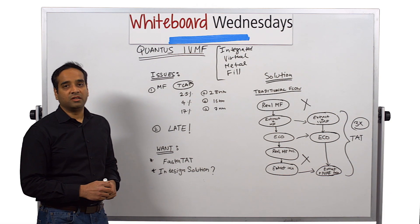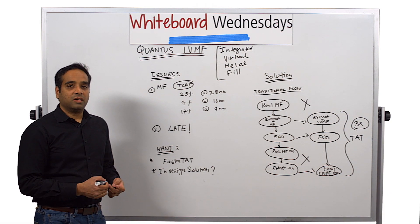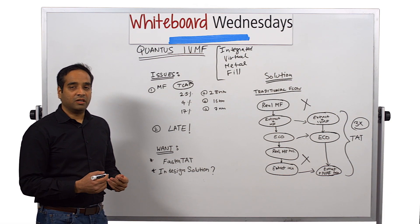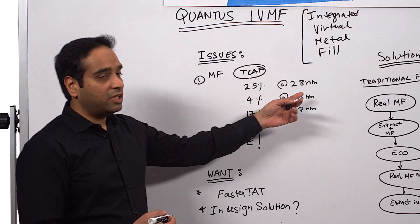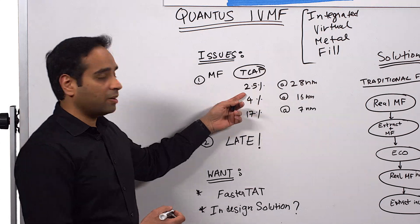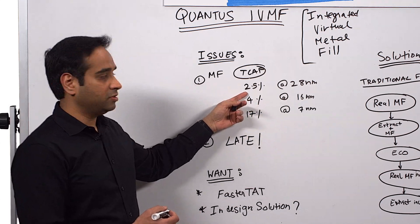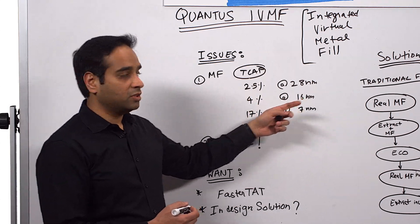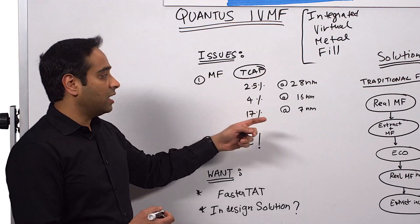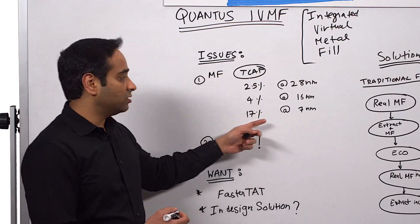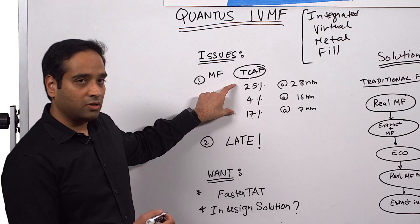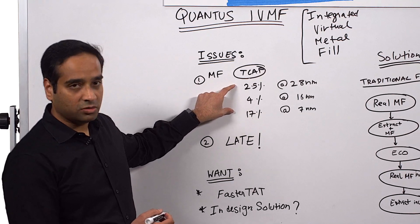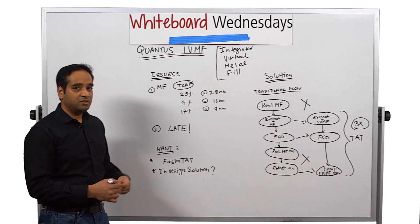Some of the issues we're seeing in advanced nodes are that the effect of metal fill increases the total capacitance by a large extent. In a 28 nanometer process, the total cap increases by 2.5%. In a 16 nanometer process, it's up to 4%. And in a 7 nanometer process, it goes up to 17%. The difference keeps growing really large as the advanced nodes progress, and this is a big issue.